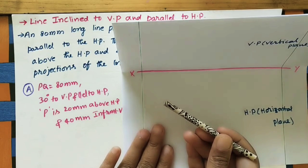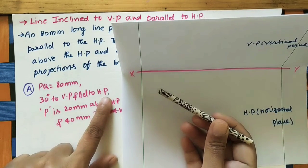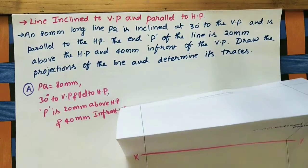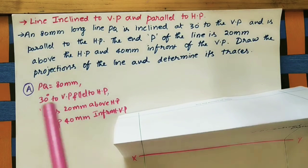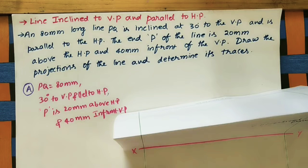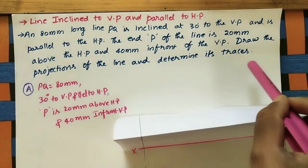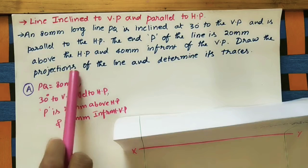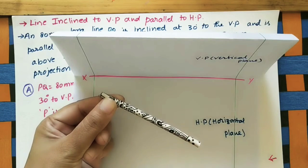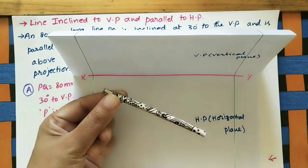The line is making 30 degrees to VP and is parallel to HP. We need to draw the projections of this line — that means the front view and the top view — and then determine its traces.